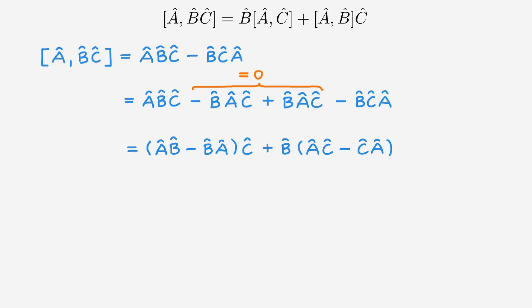We can now see that the brackets are commutators. So we get this commutator times C plus B times this commutator. And this completes the proof.